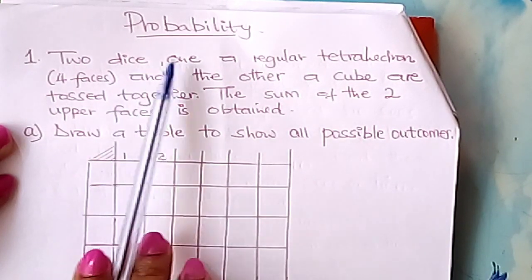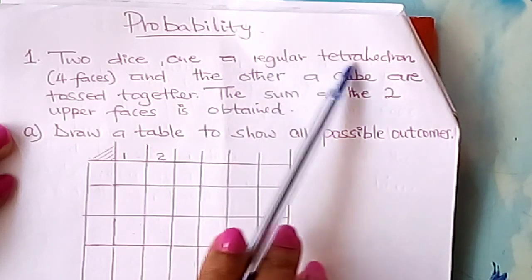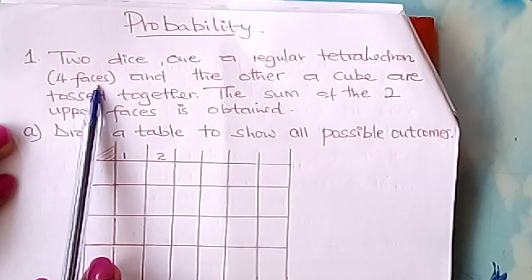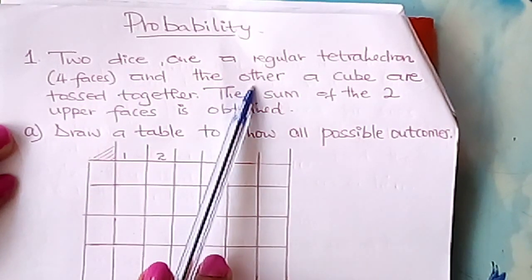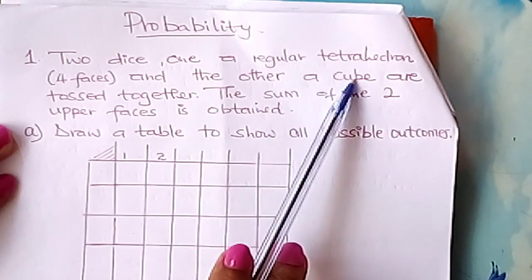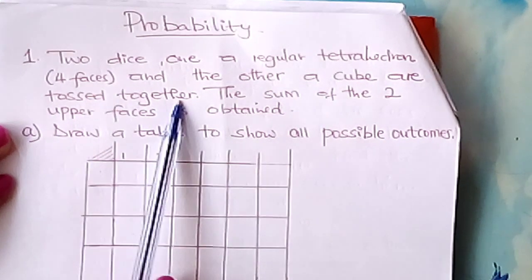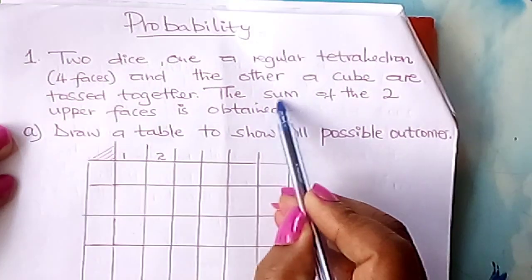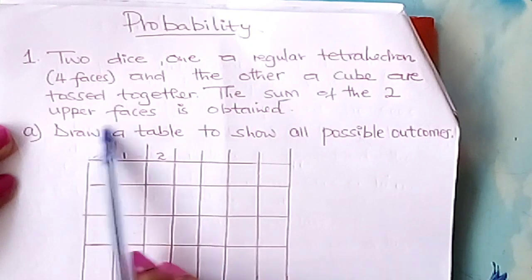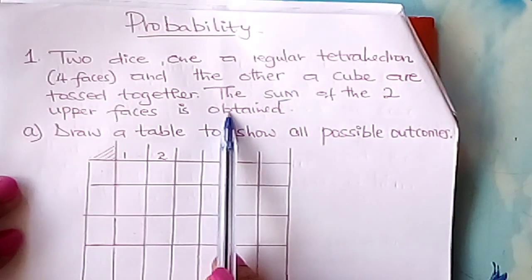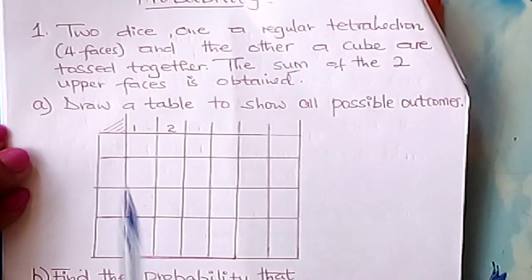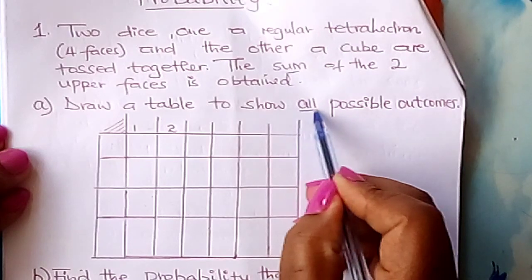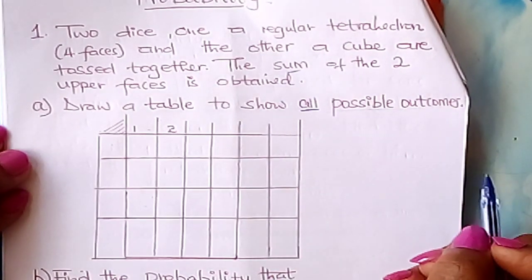Two dice — one is a regular tetrahedron, which has four faces, and the other die is a cube — are tossed together. The sum of the two upper faces is obtained. You are asked to draw a table to show all the possible outcomes.